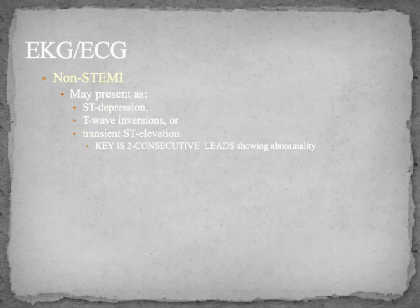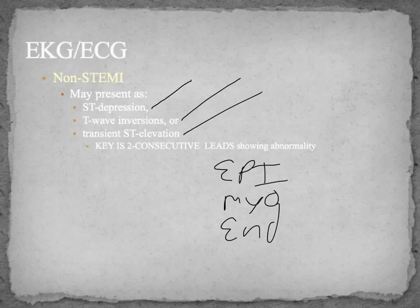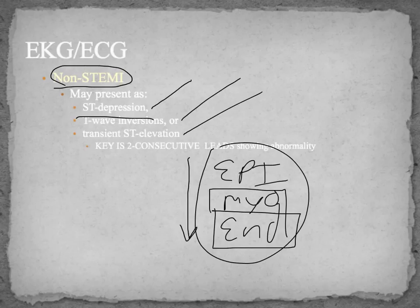Now for the non-ST-elevation myocardial infarction. Usually it means there's ST depression, T wave inversion, or transient ST elevation. Non-ST elevation MI or ST depression usually means you don't have a transmural infarction — the whole wall isn't dead — but usually the endocardium has been infarcted or ischemic, or the endo- and myocardium, but never transmural.